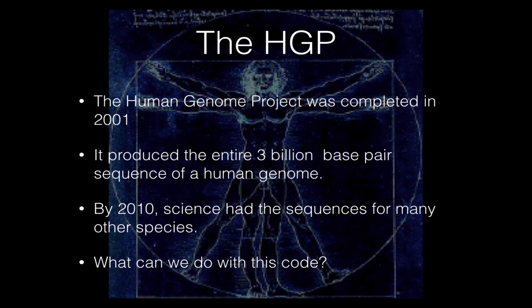The Human Genome Project is kind of where DNA technology first entered the mainstream consciousness. This was a multi-billion dollar project contributed to by many different nations including the United States, Japan, France, Italy, England, and others. It was completed in 2001, and what came out of it was a complete sequence of a human's DNA — all the A's, T's, C's, and G's — coming out to about three billion base pairs long.